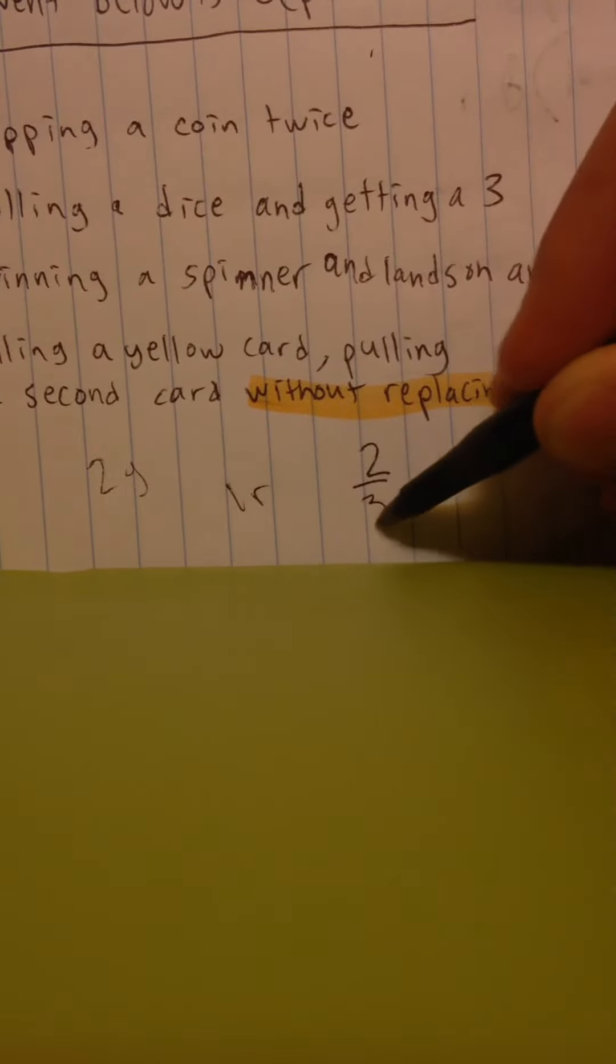Let's say we have three cards, and what's the probability of pulling a yellow card? Now, let's say we have two yellow and one red. If we pull out one yellow, the probability is going to be two out of three.